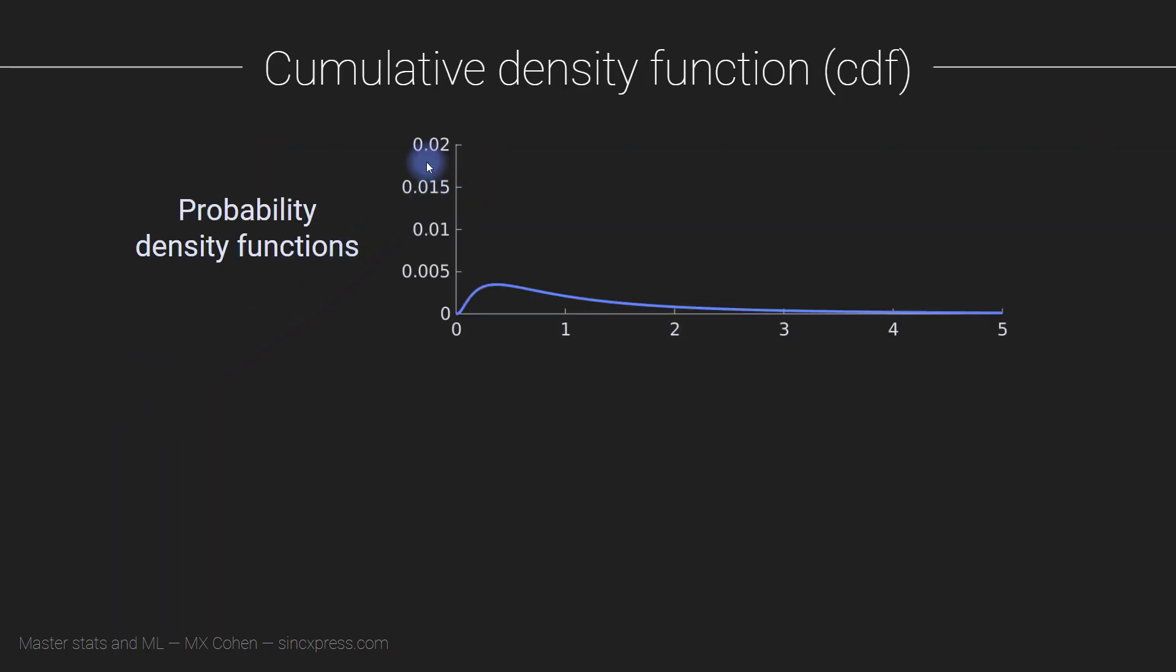Finally, I would like to introduce you to something called the cumulative density function. It's derived from a probability density function. What you do is you go through each specific point here in the probability density function, and you sum up all the values to the left. So this is called the cumulative sum.